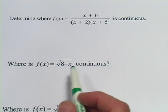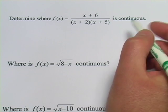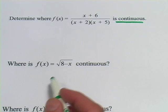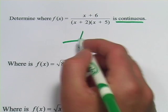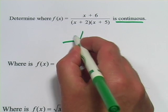In these problems we are trying to determine where a function is continuous. This idea of continuity means that, let's take for example y equals x squared.